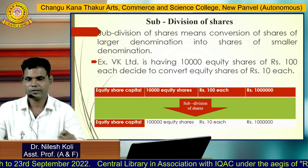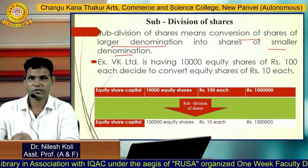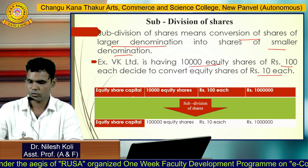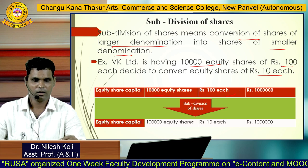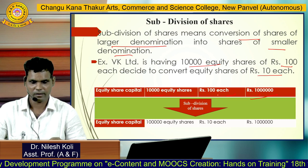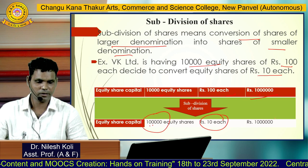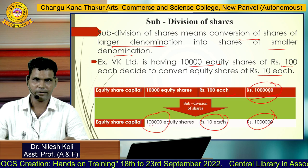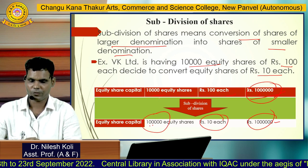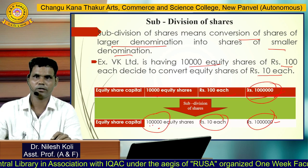Subdivision of shares is the conversion of shares of larger denomination into smaller denomination — opposite of consolidation. Example: VK Ltd. has 10,000 equity shares of Rs. 100 each, which are converted into equity shares of Rs. 10 each. The total share capital is Rs. 10 lakhs both before and after subdivision. The value per share decreases from Rs. 100 to Rs. 10, and the number of equity shares increases from 10,000 to 1 lakh. Only the number of shares changes; the total share capital remains the same. This is called subdivision of shares.